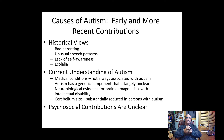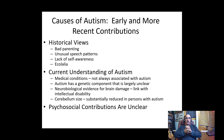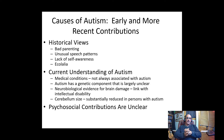The cerebellum is substantially reduced in size in people with autism, providing some neurobiological evidence around brain structure as a cause. Regarding psychosocial contributions, we don't have a clear understanding of how people's experiences contribute to autism itself. However, psychosocial factors have a lot to do with how well people with autism do, based on the programs, interventions, and supports they receive.